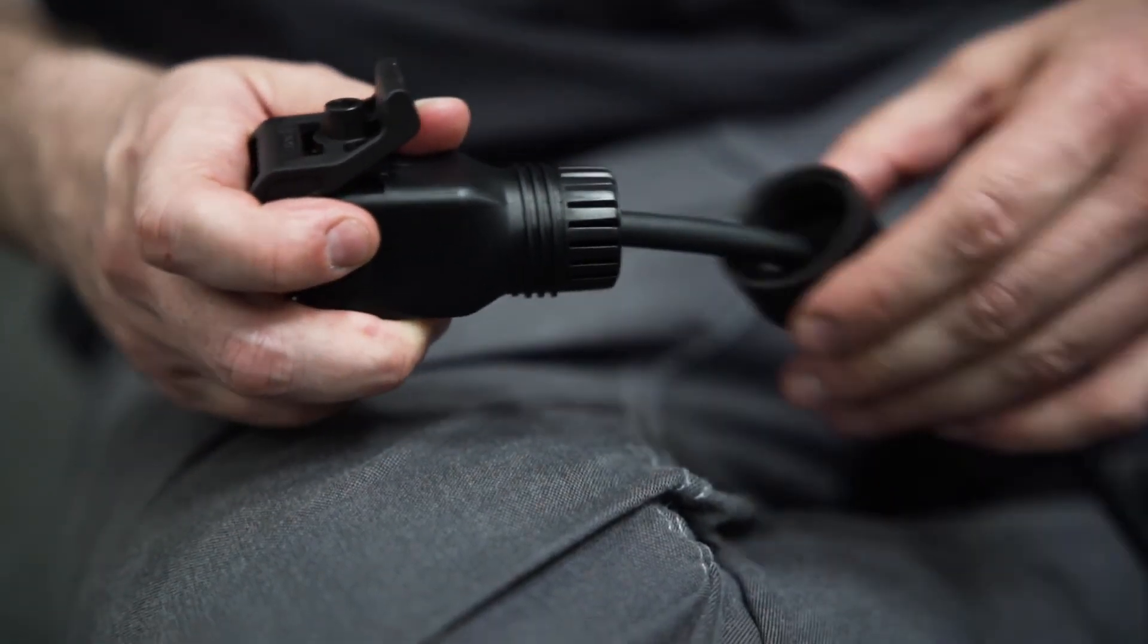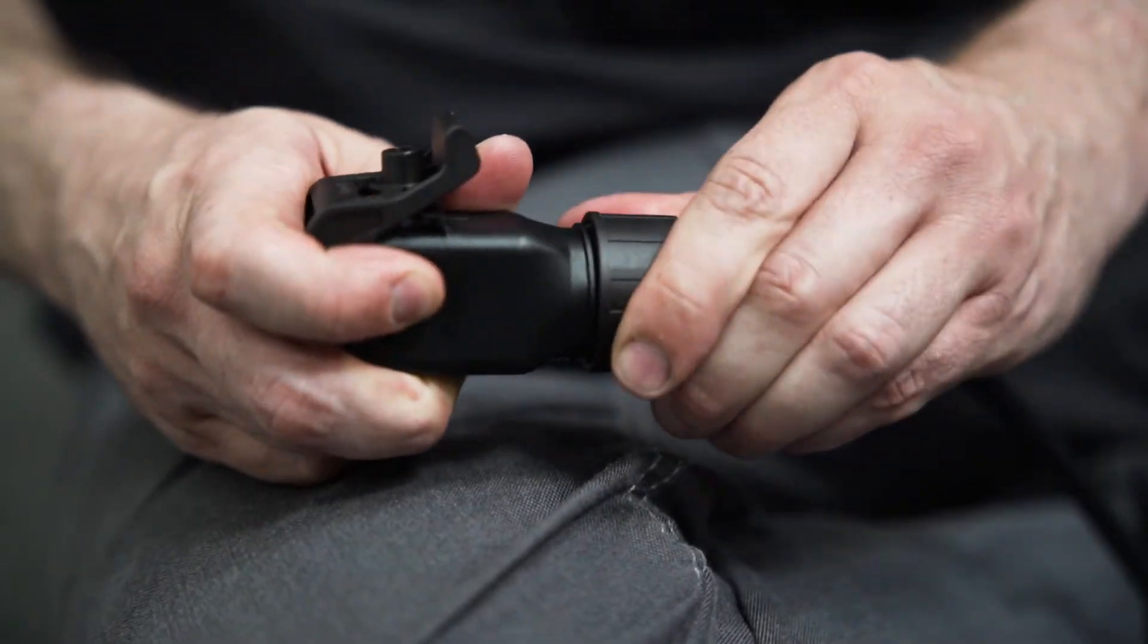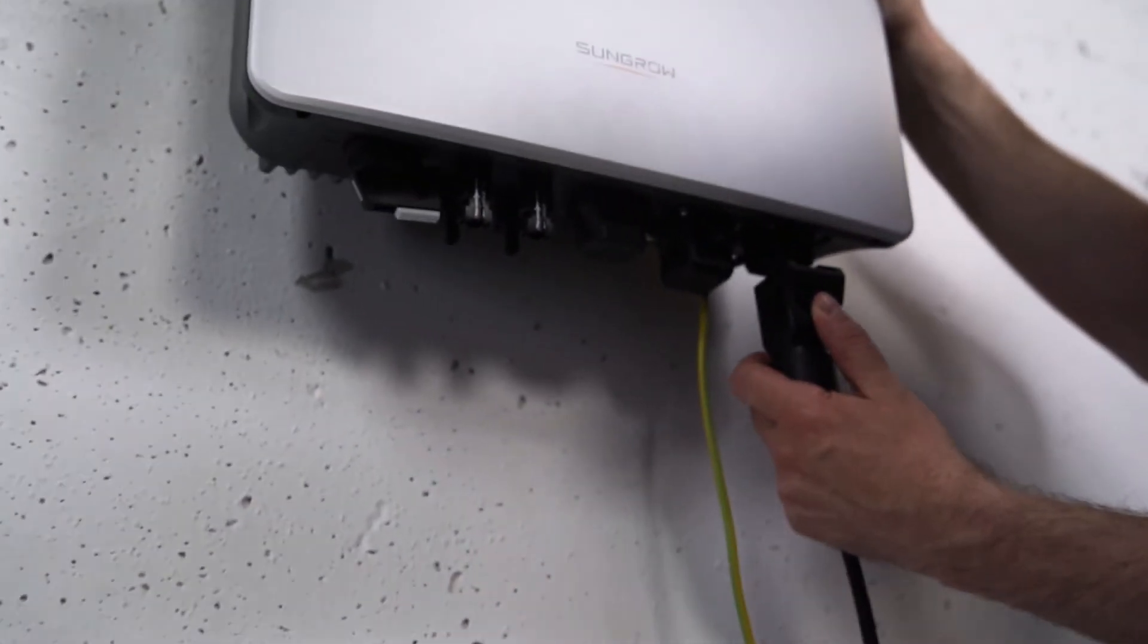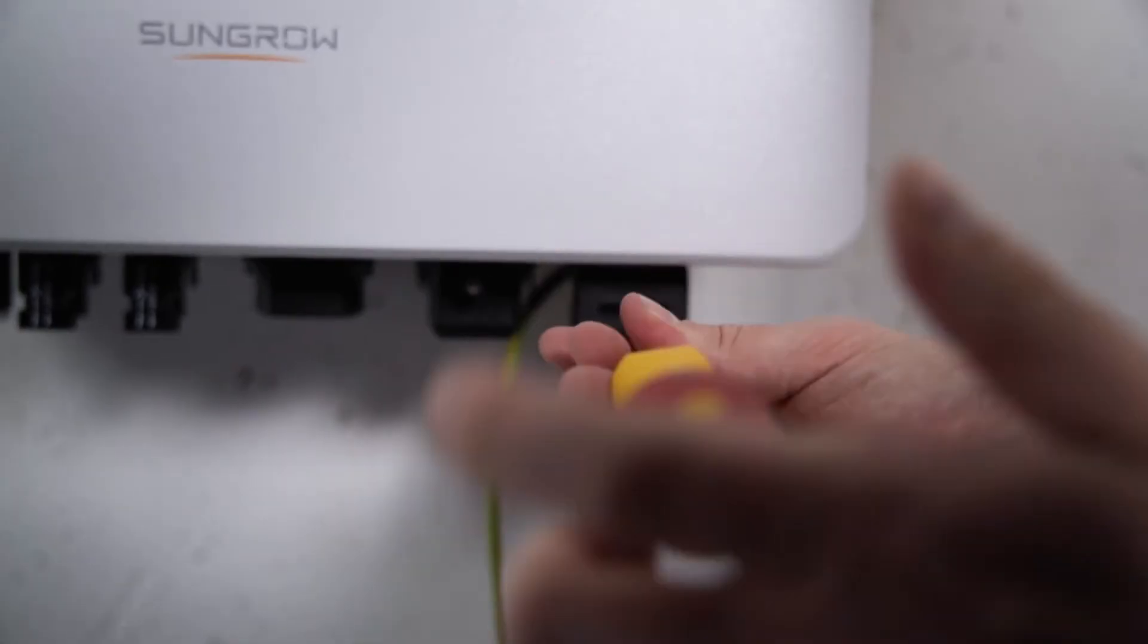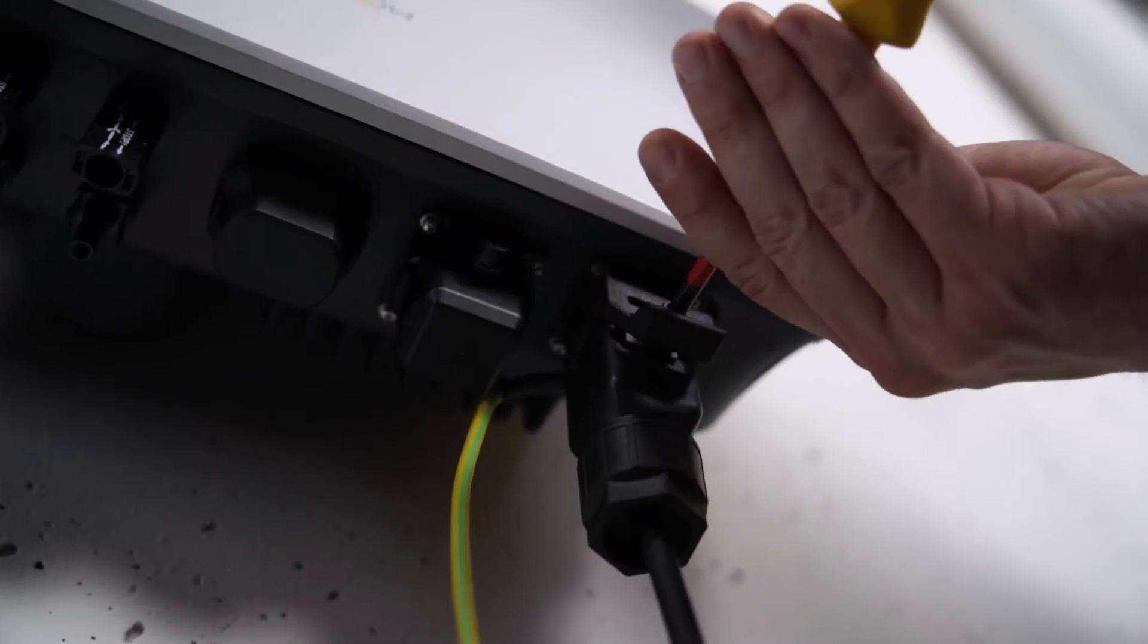Last but not least, you have to tighten the fasteners. Connect the AC connector to the inverter and fix it with an M4 screw. That's it. Quick and easy.